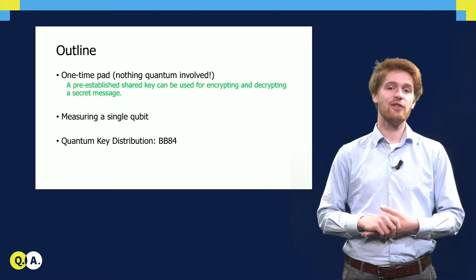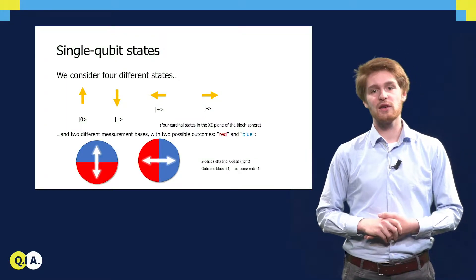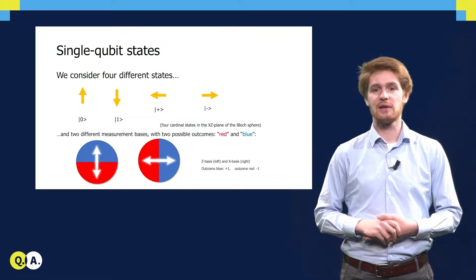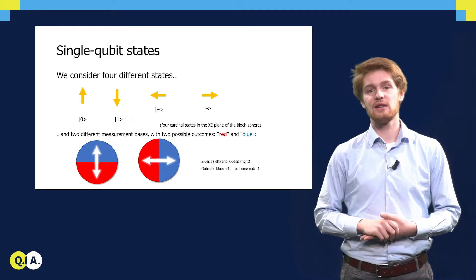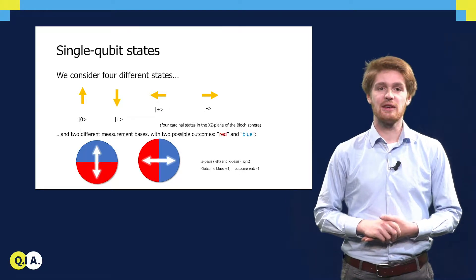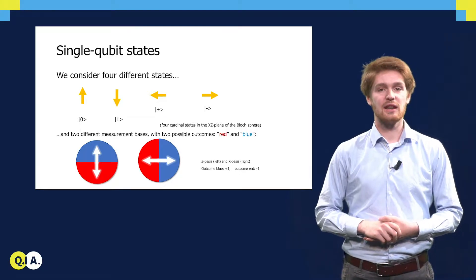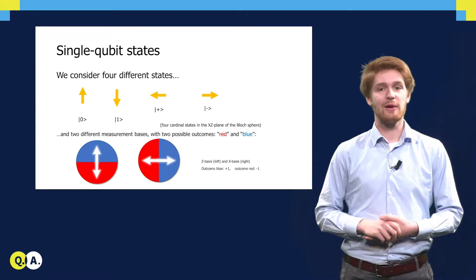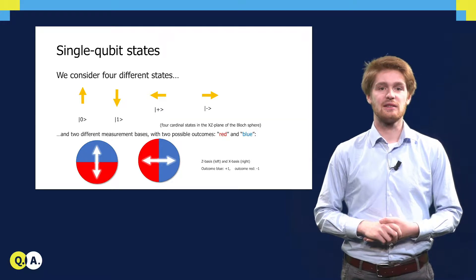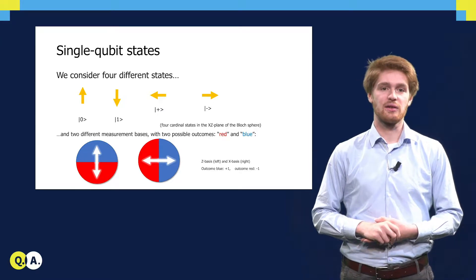In the BB84 protocol, we will use four different single qubit states. There is the zero state, here represented by an upward arrow; the one state, a downward arrow; and the plus and minus states, here depicted as horizontal arrows.